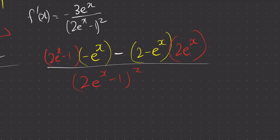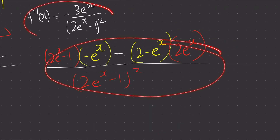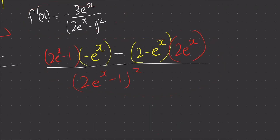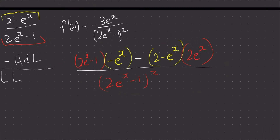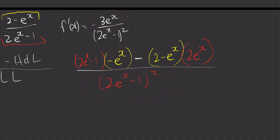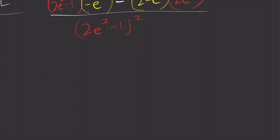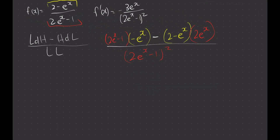Does this look like the target yet? Not yet — we just need some simplification. We can factor out e to the power of x, and we want to get 3e to the power of x. The bottom is already done. So let's expand everything first to see what we can do.